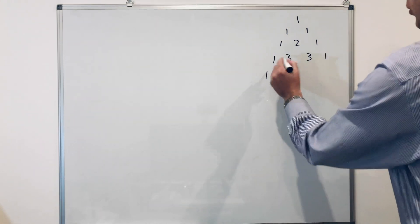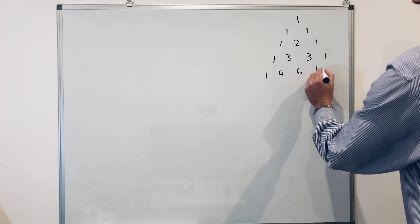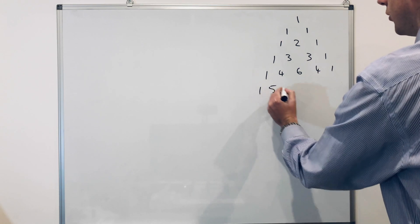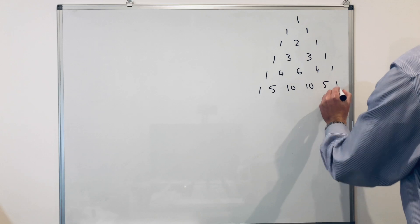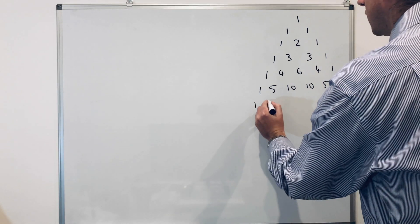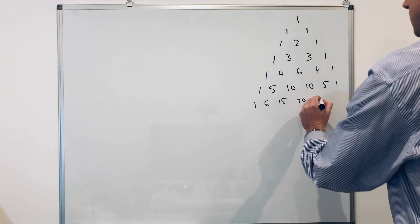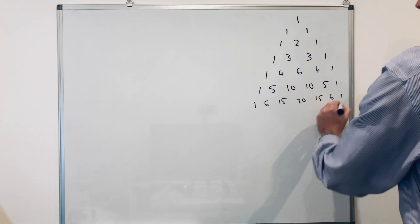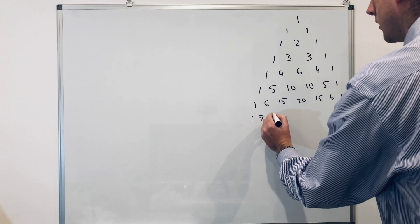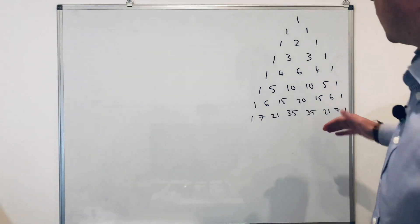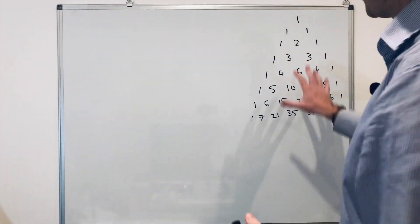So we've got row 3: 1, 2, 1. Then 1 plus 3 is 4, 3 plus 3 is 6, 3 plus 1 is 4. In the 5th row: 1, 4, 6, 4, 1. In the 6th row: 1, 5, 10, 10, 5, 1. And the 7th row: 1, 6, 15, 20, 15, 6, 1. I'll just leave it there and do the work on the left hand side and refer back to this.